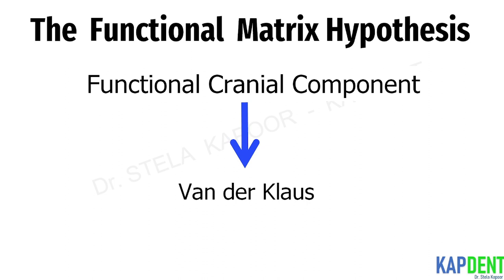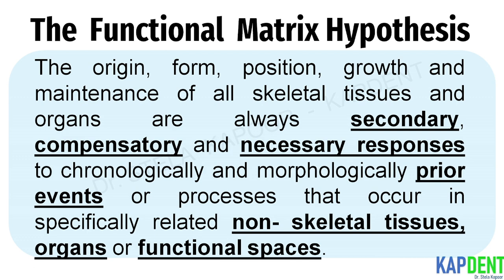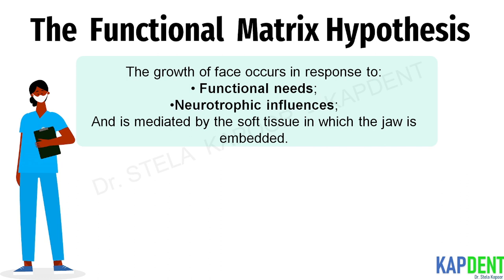According to the Functional Matrix Hypothesis, the origin, form, position, growth and maintenance of all skeletal tissues and organs are always secondary to the prior events or processes that occur in specifically related non-skeletal tissues, organs or functional spaces. Simply put, the growth of the face occurs in response to functional needs and neurotrophic influences as mediated by the soft tissue in which the jaw is embedded. As the soft tissues grow, the bone and cartilage react.